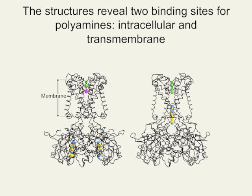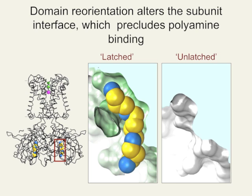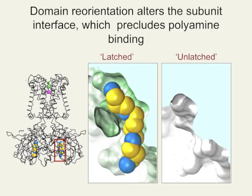On the right, an axial spermine penetrates the conduction pore as far as is possible. This close-up of the molecular surface shows why spermine binds only at latched interfaces.